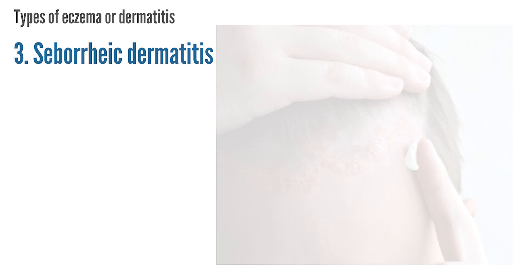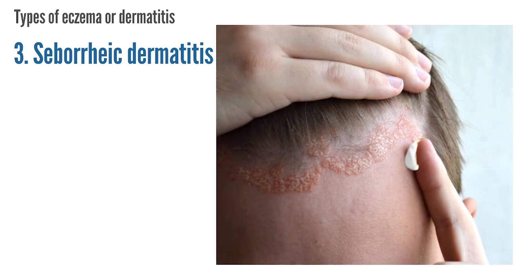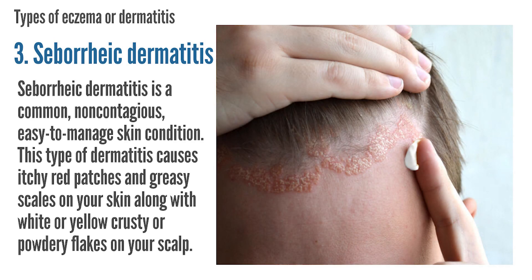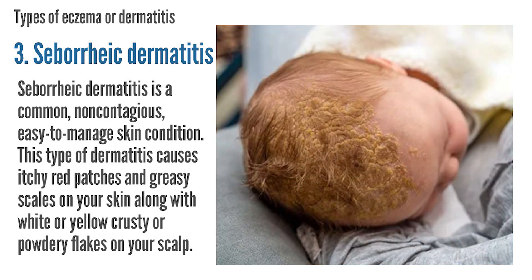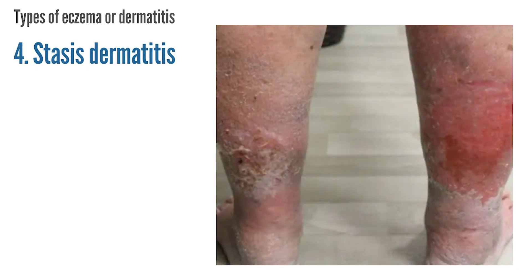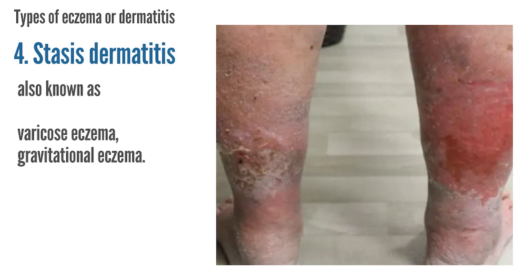Seborrheic Dermatitis is a common, non-contagious, easy-to-manage skin condition. This type of dermatitis causes itchy red patches and greasy scales on your skin, along with white or yellow crusty or powdery flakes on your scalp. Stasis Dermatitis, also known as varicose eczema or gravitational eczema.